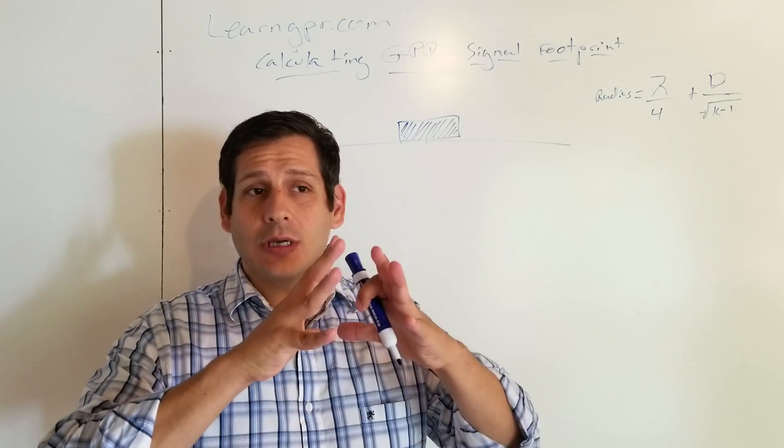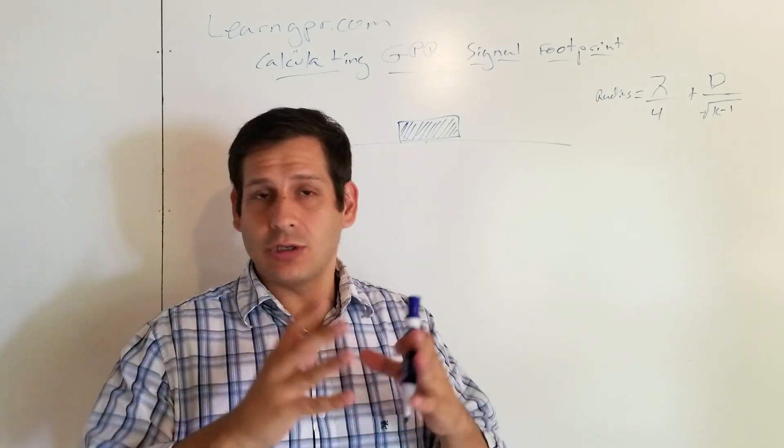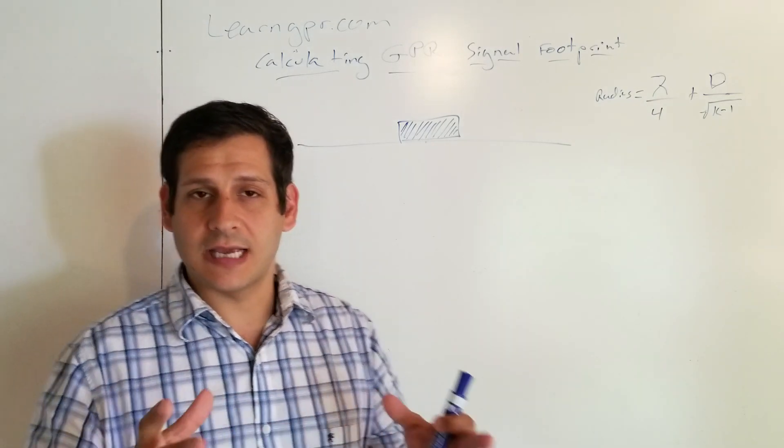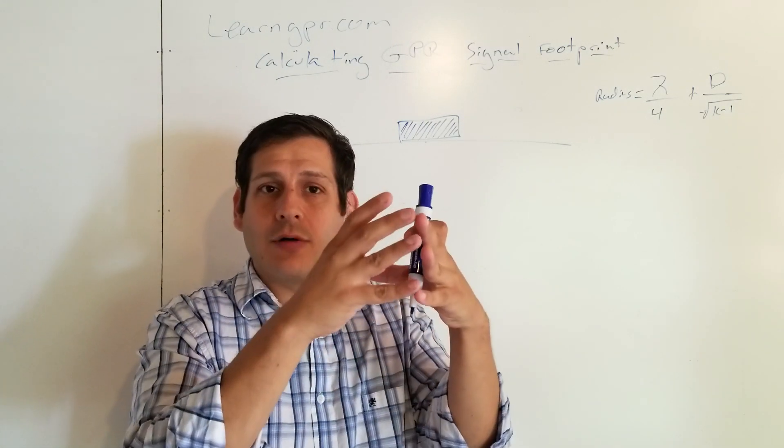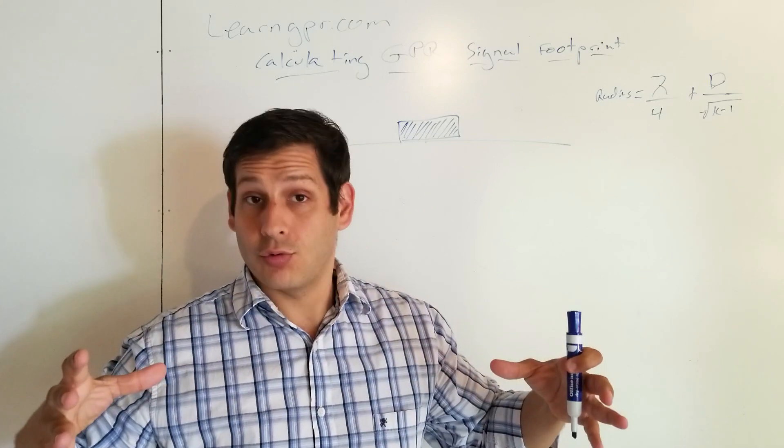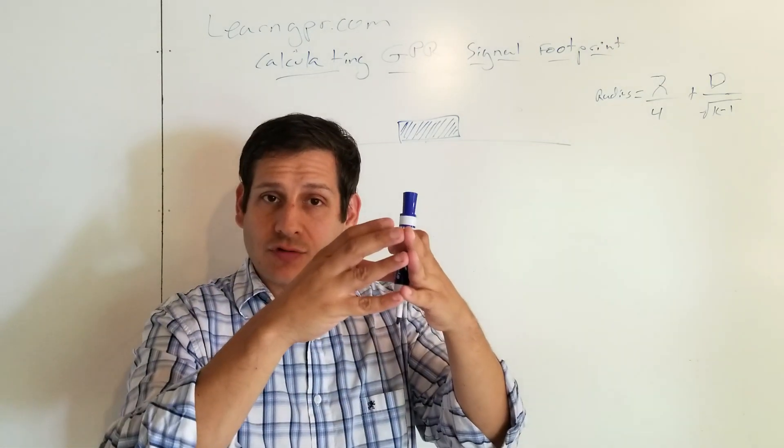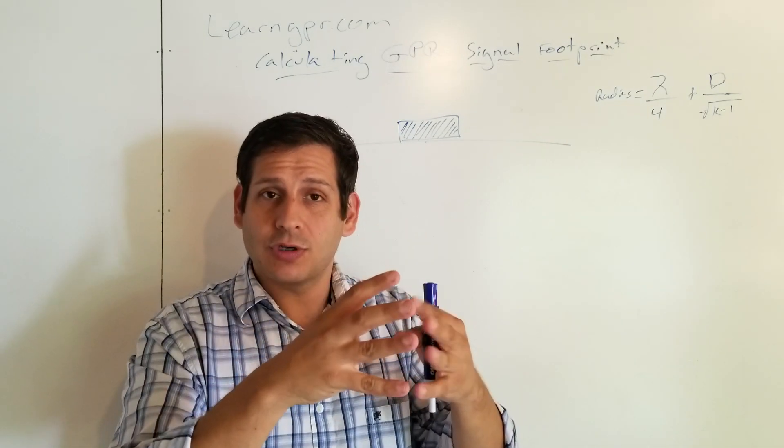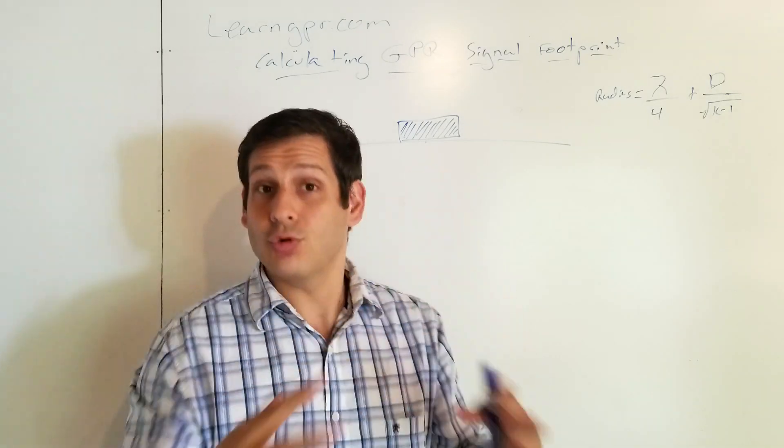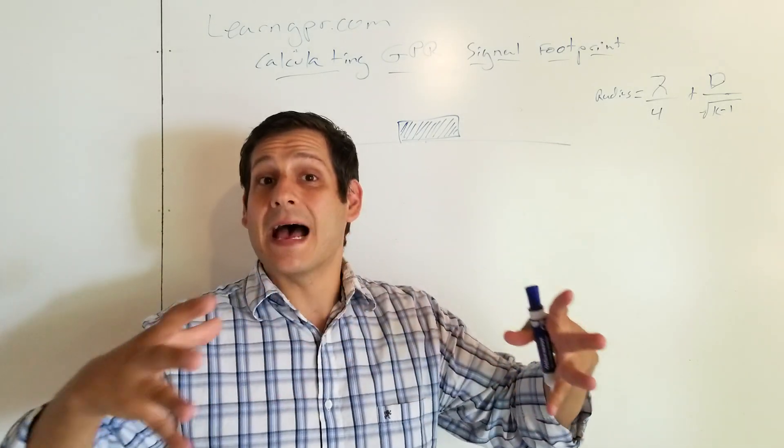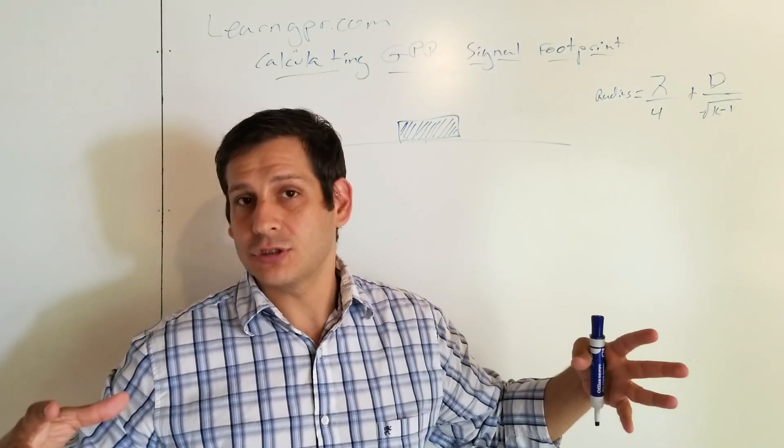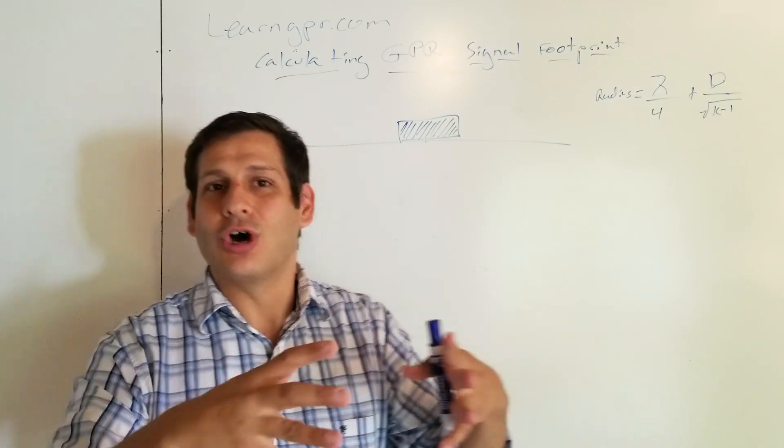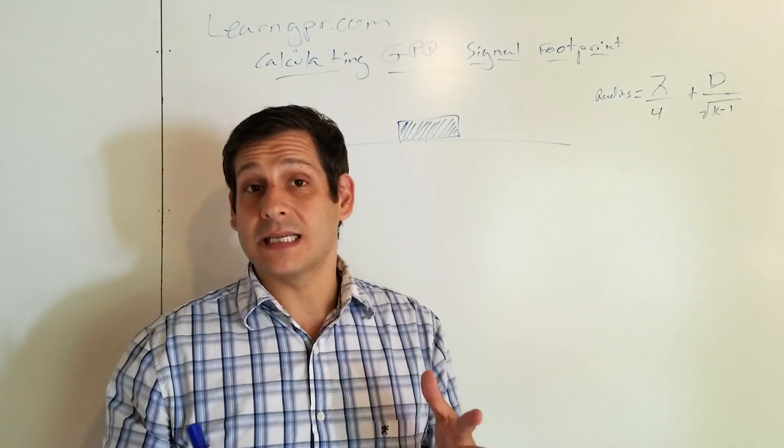So as the GPR is being used in any given survey or data acquisition, the signal comes out in somewhat of a spherical shape. But in the ground, it kind of spreads out as a cone. So the signal comes out of the transmitter and as it's coupled with the ground and it moves, propagates through the ground, it spreads out from the source and it spreads out in kind of a conical, somewhat of a shape. It's kind of an elliptical cone. That's how it spreads.